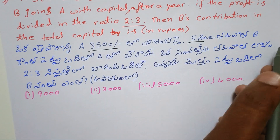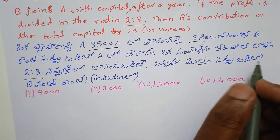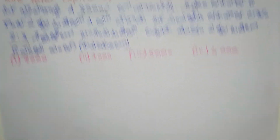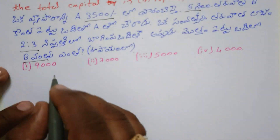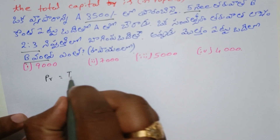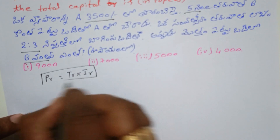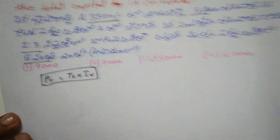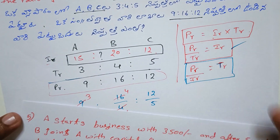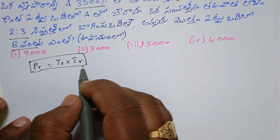A is 3,500 rupees. We need to find B. Profit ratio is equal to investment ratio multiplied by time ratio; time ratio multiplied by investment ratio gives us the investment ratio.